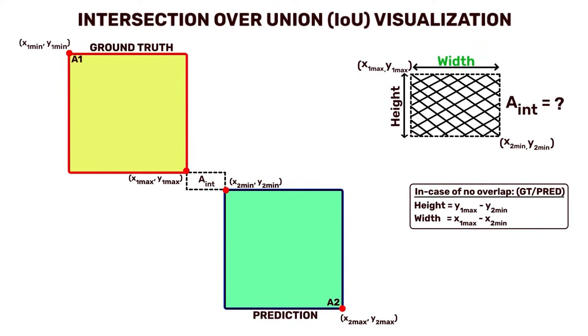Similarly, the width of the intersection is computed by subtracting X2min from X1max. This subtraction yields the horizontal distance between the left and right edges of the intersection.